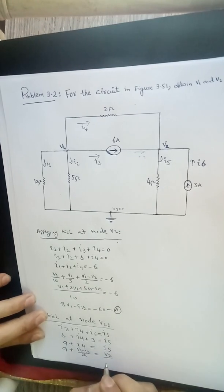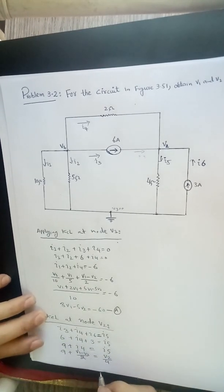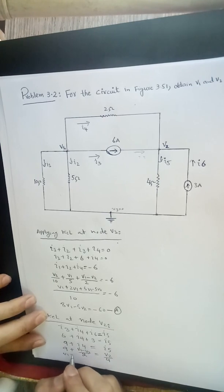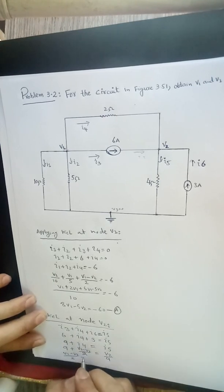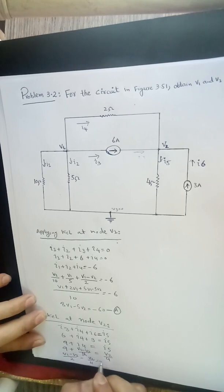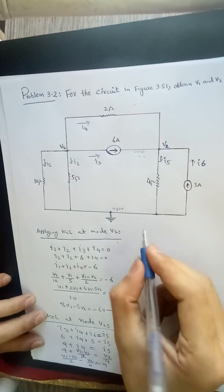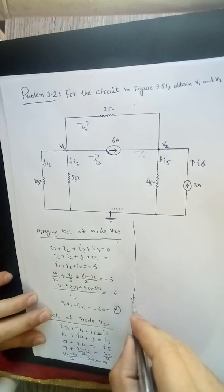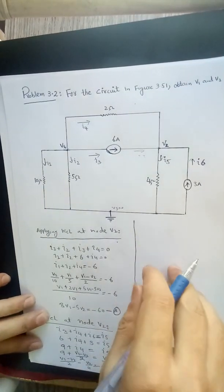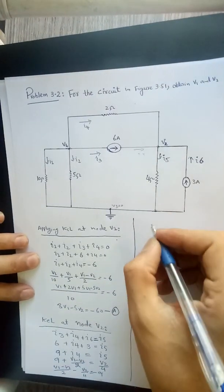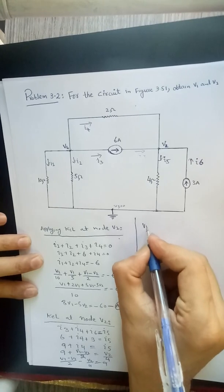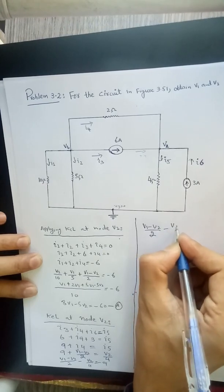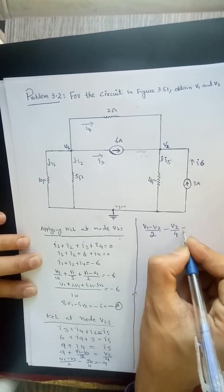V1 minus V2 divided by 2 equal to I5, which is V2 divided by 4. V1 minus V2 divided by 2 minus V2 divided by 4 equal to minus 9.